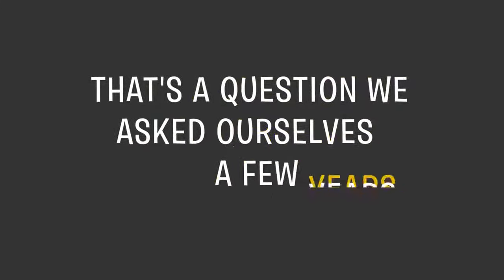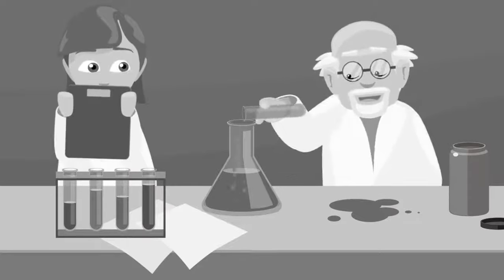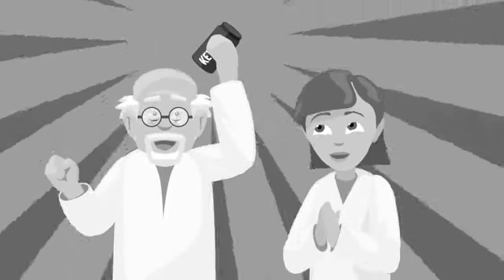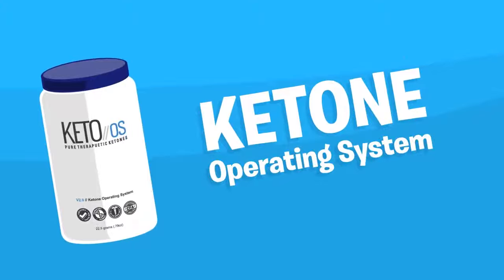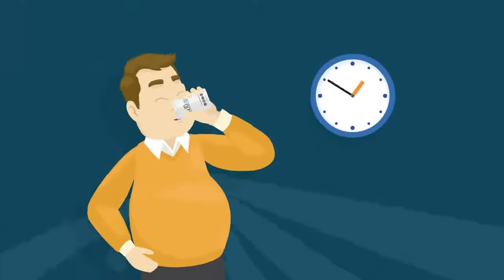Well that's the question we asked ourselves a few years ago and at first it seemed like an impossible question. But recently some scientists we work with have stumbled upon a new formula that actually made it possible. We call this new formula the ketone operating system or keto OS for short. Within just 60 minutes of taking it your body almost instantly goes into ketosis.